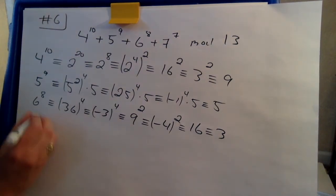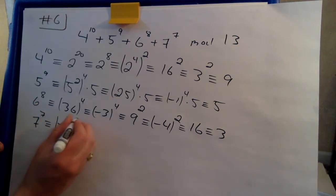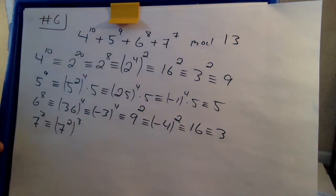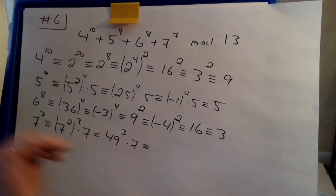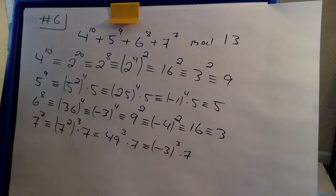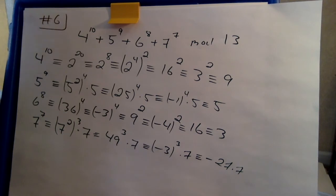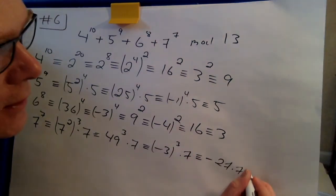And finally, 7 to the 7. Well, 7 squared is 3, then that's 6 to the 7. So there's one more 7 to make that 7 there. That's 49 cubed. 49 is 3 less than the number of cards in a deck. So we have minus 3 cubed times 7. I'll multiply that out. Minus 27 times 7. 27 is 1 more than 26. So 27 is congruent to 1. So we get here that this is minus 7.